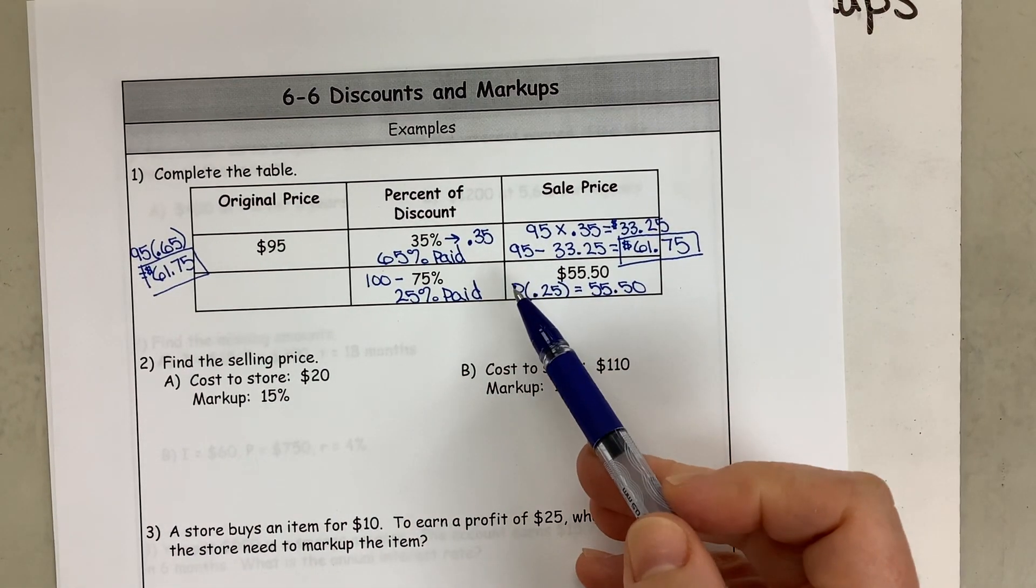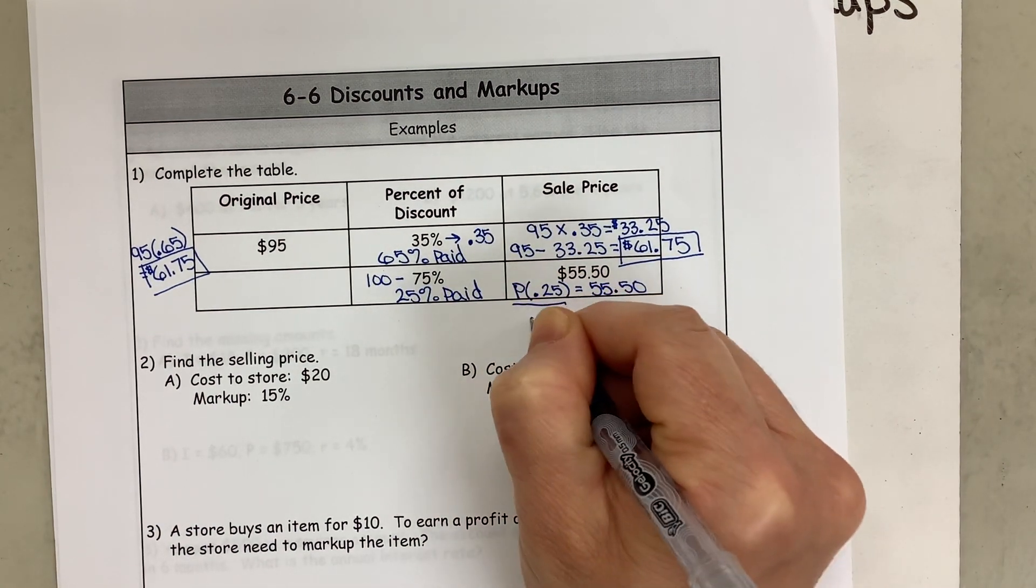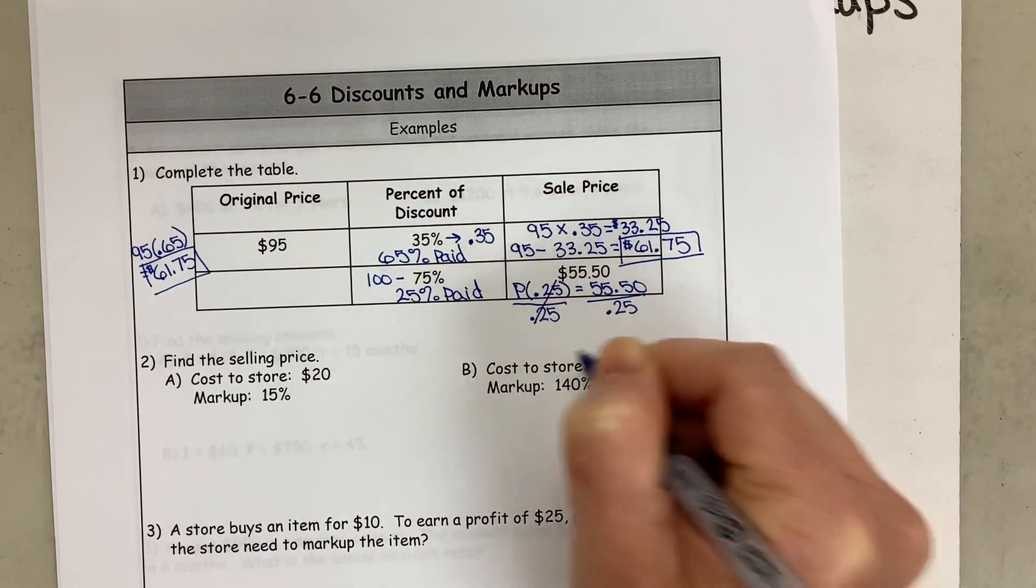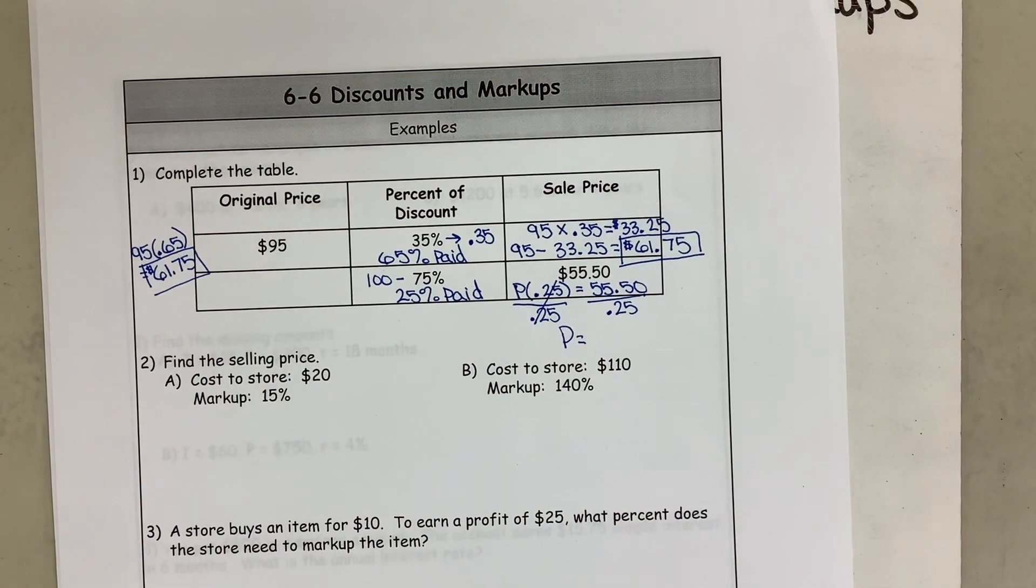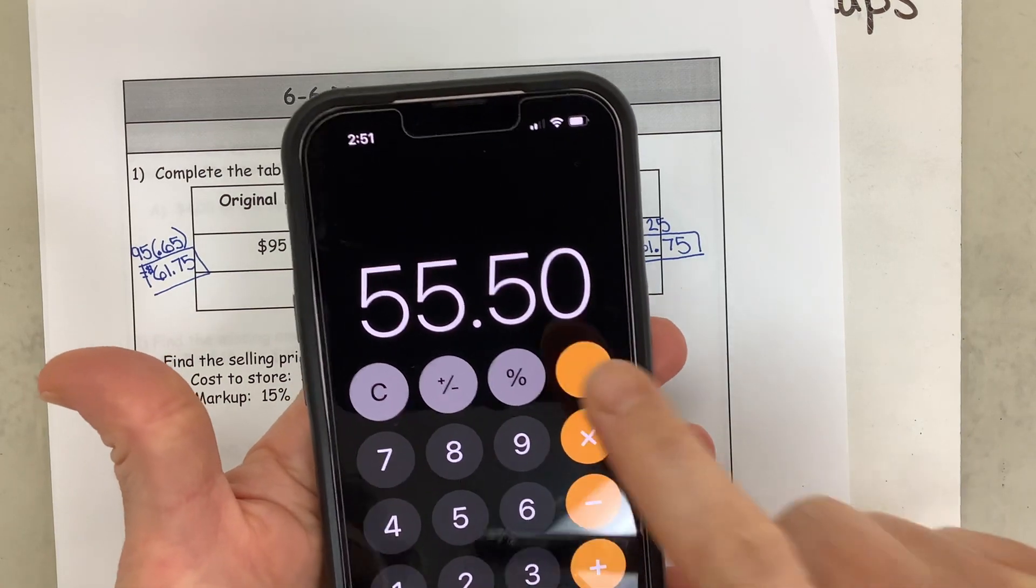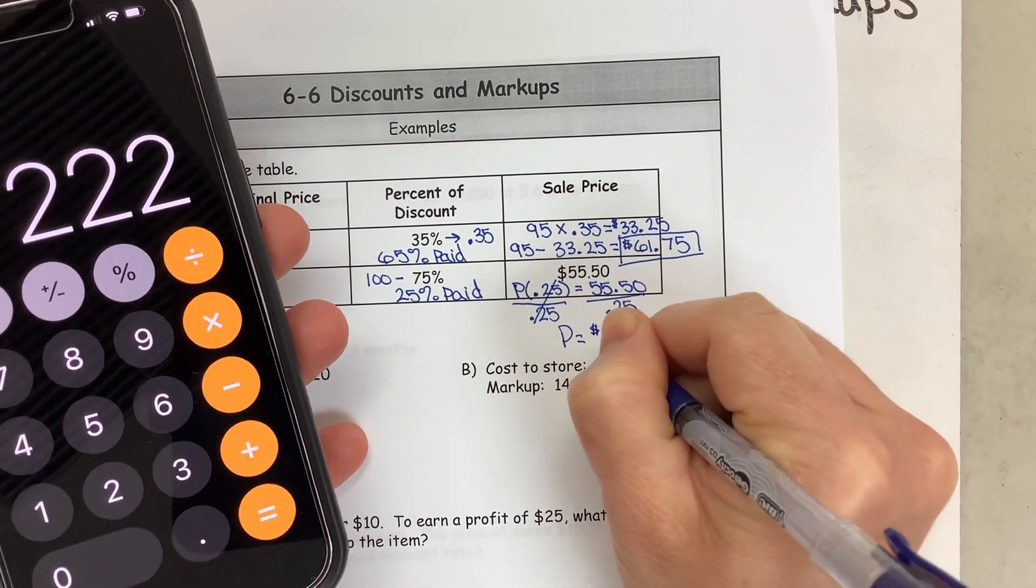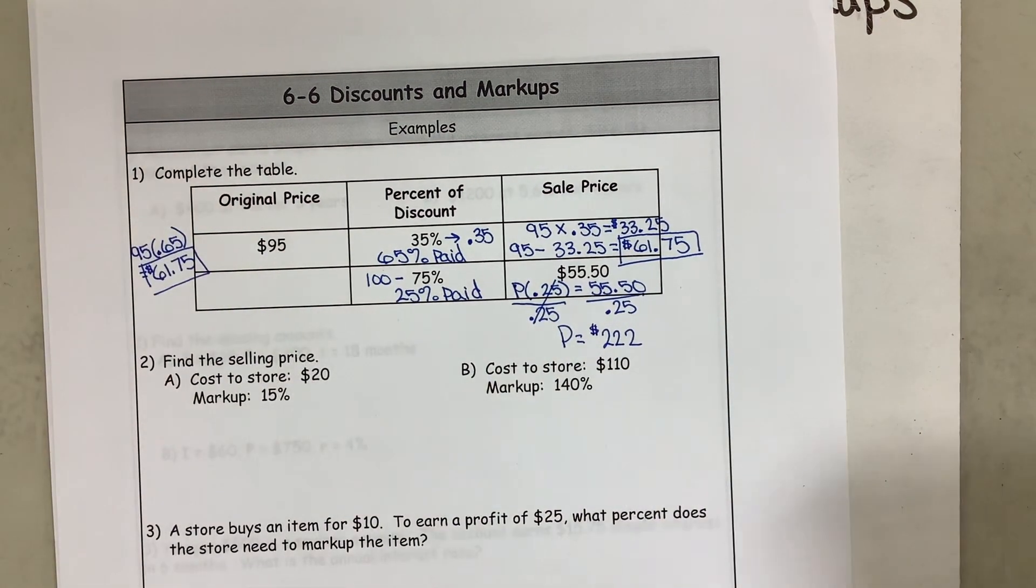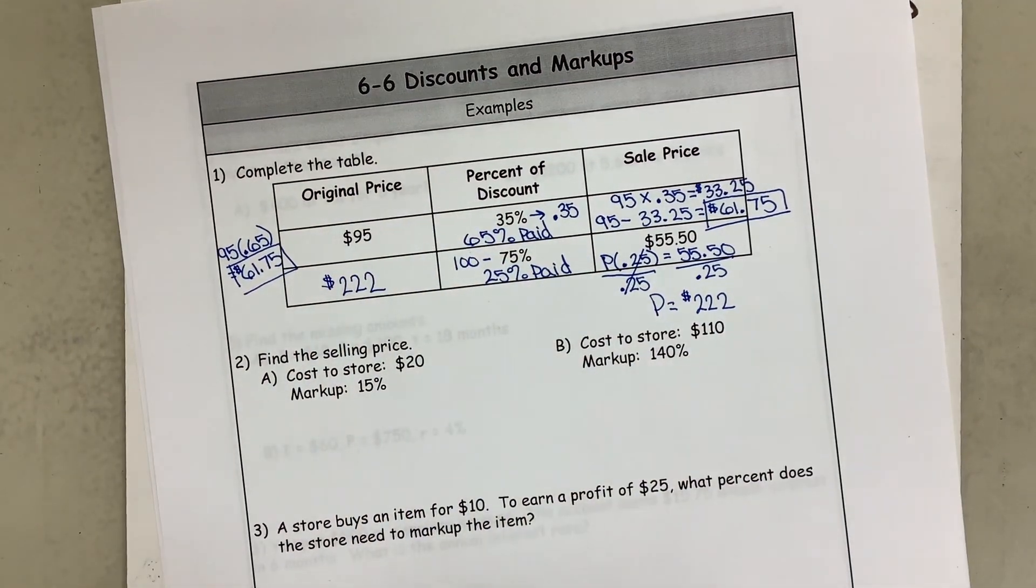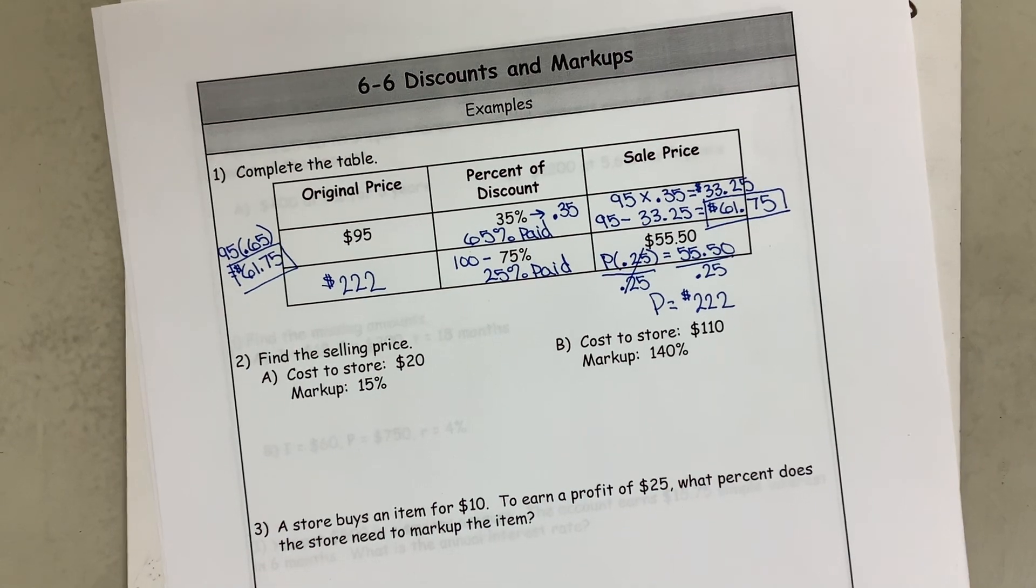So what we can do is we can take the original price P times the 0.25 that I actually paid and that's going to equal the $55.50. Well, we want to solve for P. These are being multiplied, so the opposite is to divide both sides by the 0.25. When I do that, I find P equals, so I'm going to take my $55.50 divided by the 0.25, and I get my original price was $222. So that is what you would be doing if you went into a store and they said there was a discount.